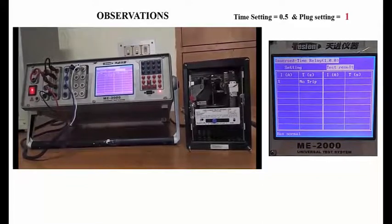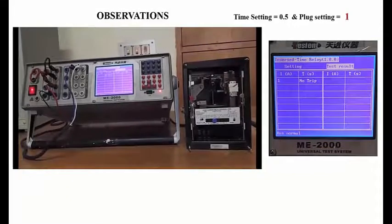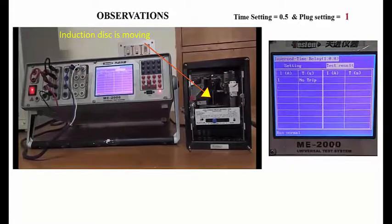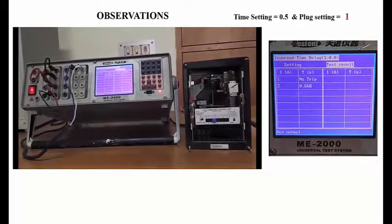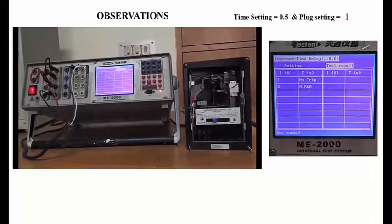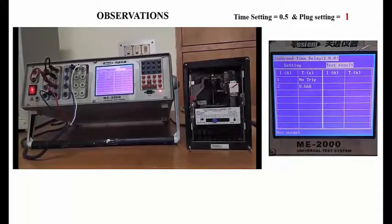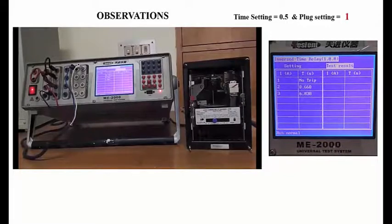The experiment is now performed. At I = 1 ampere, the disc is rotating but there is no trip because the fault time exceeded 10 seconds. At I = 2 amperes, the disc rotates again and a trip is observed at 8.668 seconds. At I = 3 amperes, the disc rotates and a trip is observed at 6.038 seconds.